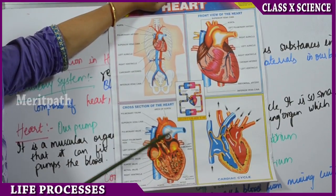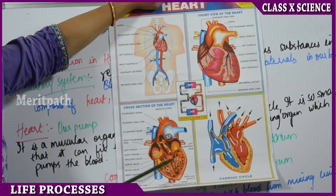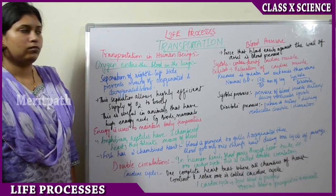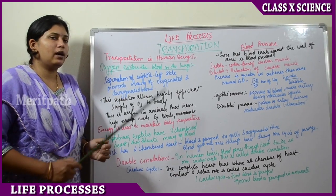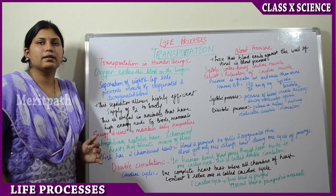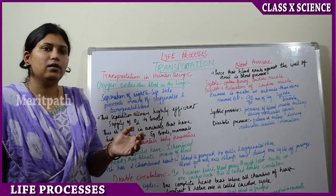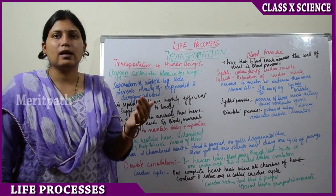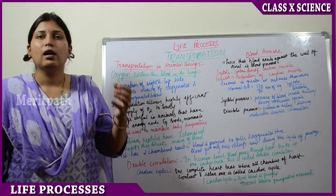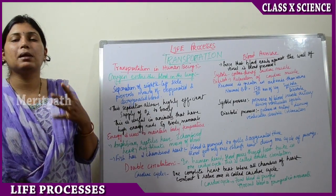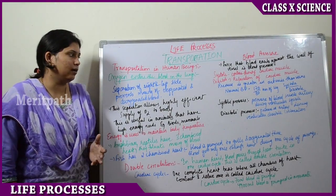There are also many arteries and veins which supply blood to the heart. Oxygen enters the blood in the lungs — when we inhale, we take in oxygen, and this oxygen mixes with the blood in the lungs, becoming oxygenated blood.